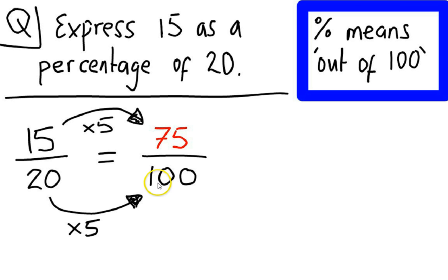Now we're not quite finished here because we've worked out 75 out of 100. Now that's what percent means. So just to finish off here, we are going to do 75%. So essentially what that means is that 15 is 75% of 20. And we've calculated that using equivalent fractions.